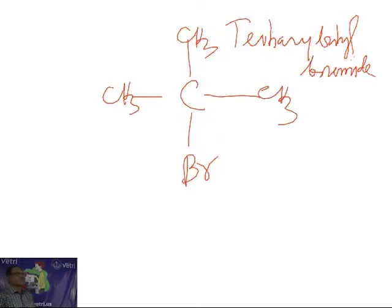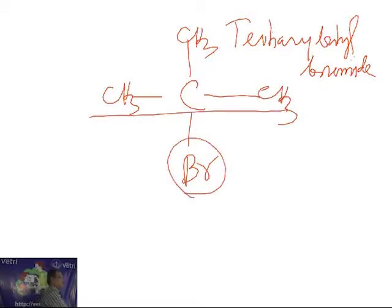One functional group. The rule says select the longest chain containing the functional group. So this is the longest chain, three carbons containing this functional group. So what I will name? Number 1, number 2, number 3.